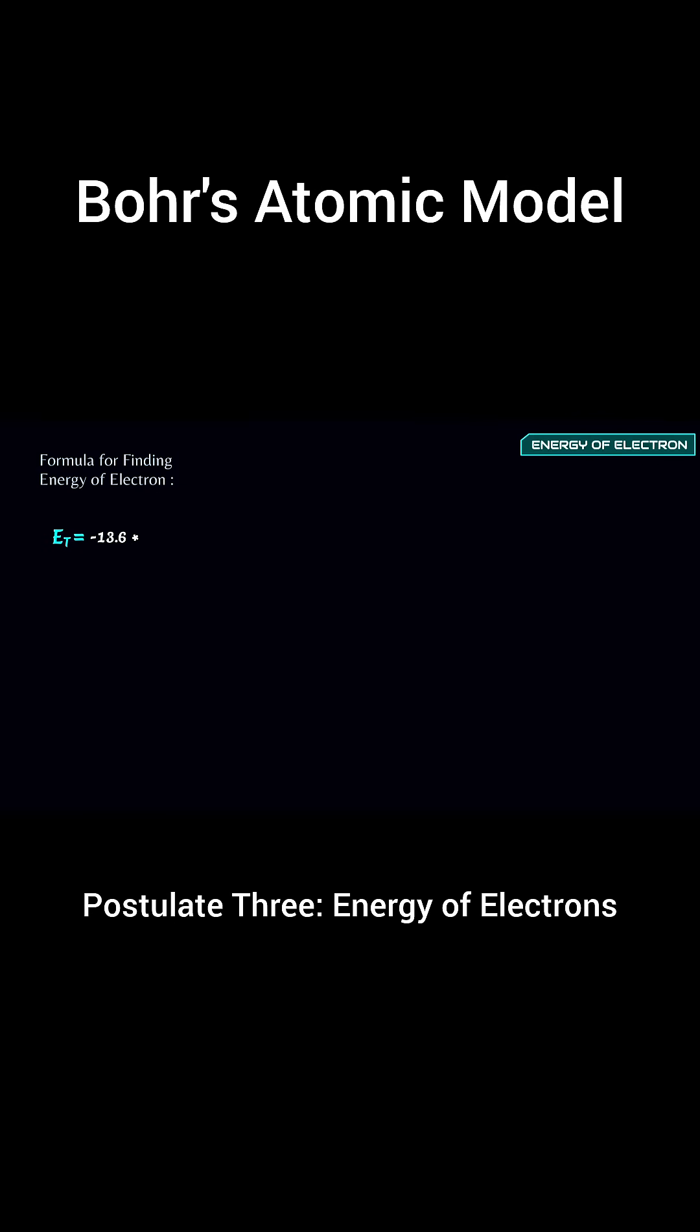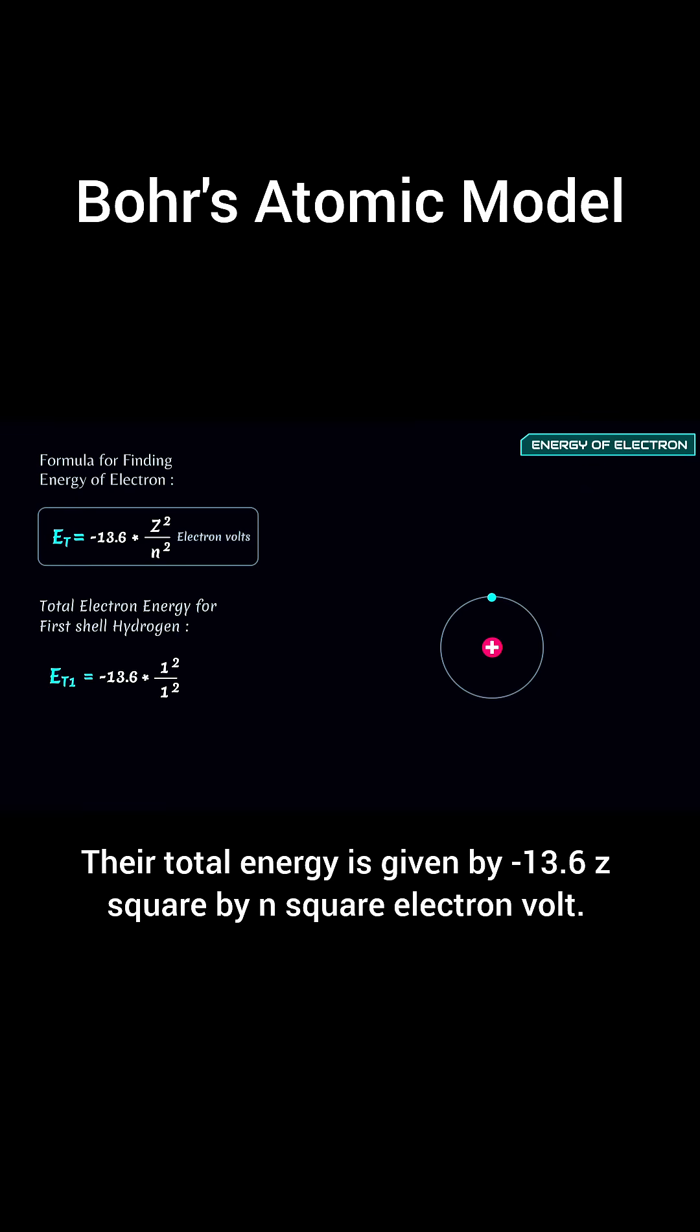Postulate 3: Energy of electrons. Electrons have fixed energy levels. Their total energy is given by minus 13.6 z-square, by n-square electron volt.